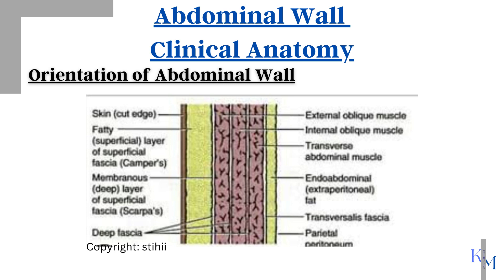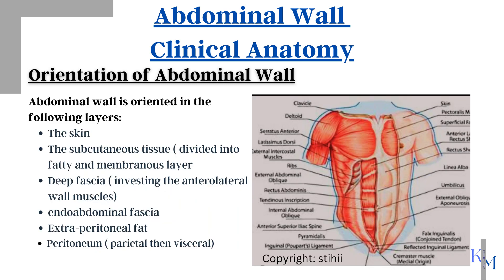These three flat muscles are external oblique, internal oblique, and transversus abdominis. The aponeurotic fibers of these muscles form a tough rectus sheath anteriorly on both sides, which encloses our rectus muscle.